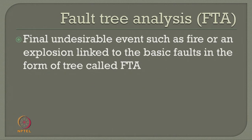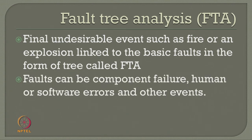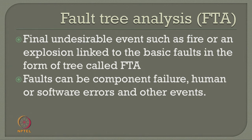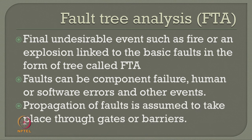Fault tree analysis gives a final output which is the final undesirable event — for example, a fire or an explosion — linked to basic faults in the form of a tree called a fault tree. The final undesirable event emerges from a series of faults in the system, all linked in a tree structure. The faults can be component failure, human error, software errors, or other parallel events. Propagation of fault is assumed to take place through gates, otherwise called barriers.